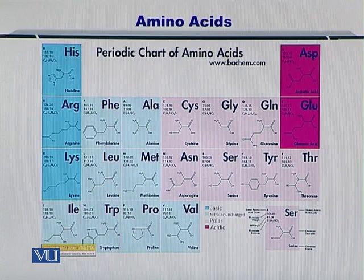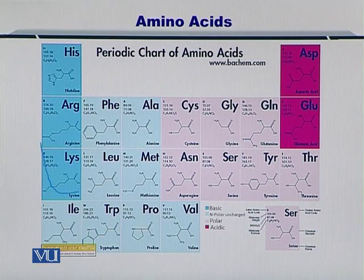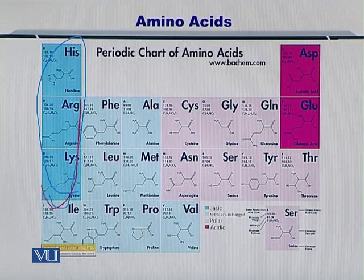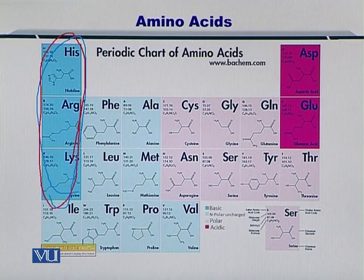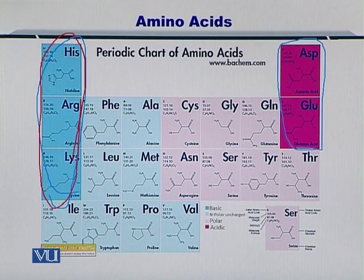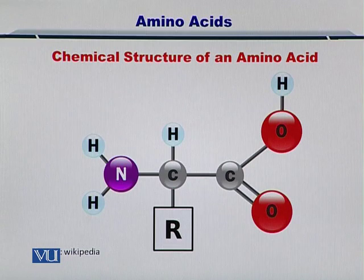As you can see in this periodic chart of amino acids, the basic amino acids — or the amino acids with basic properties — are listed on this side. And the acidic ones are listed on the other side. The rest of them have partially acidic and partially basic properties.